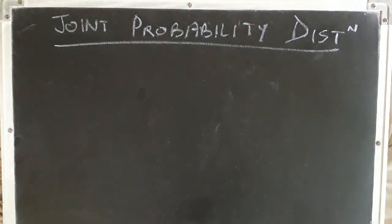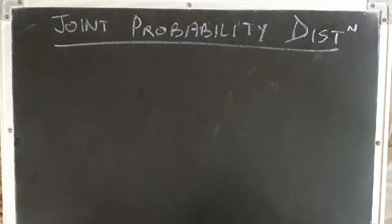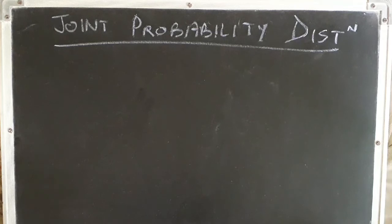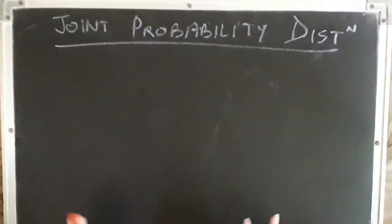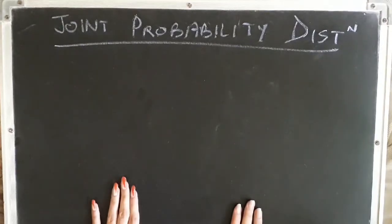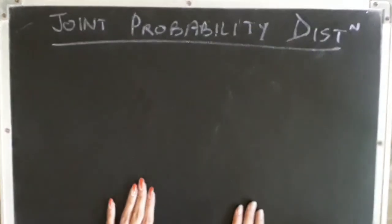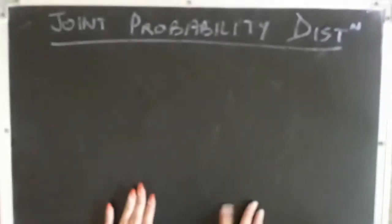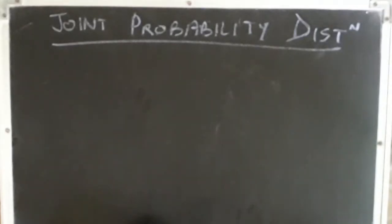In this video, we will learn about joint probability distributions. Joint probability distributions have two cases: the discrete case and the continuous case, both of which we are going to cover in this video. So firstly, let us begin with the discrete case of joint probability distribution.